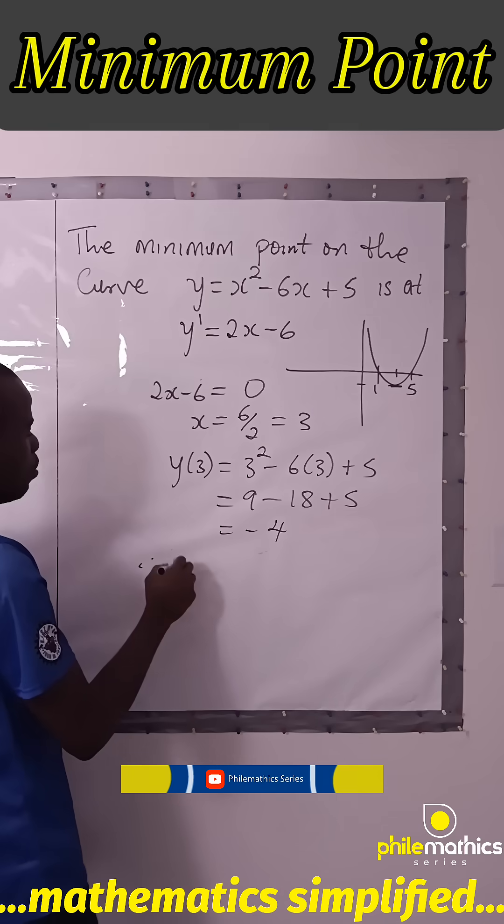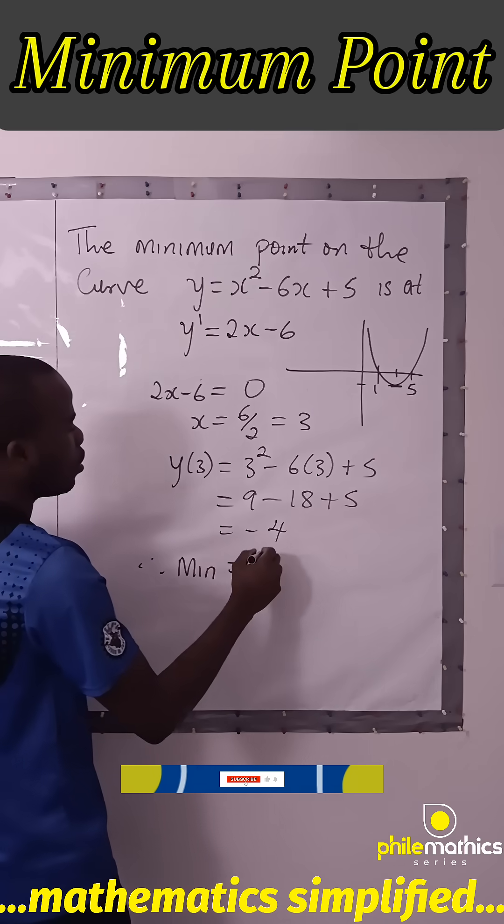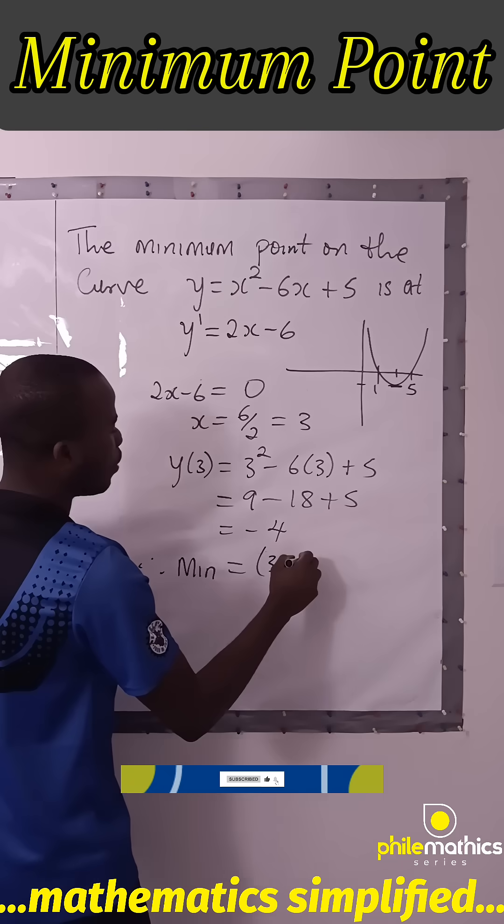Therefore, the minimum point will be 3, minus 4.